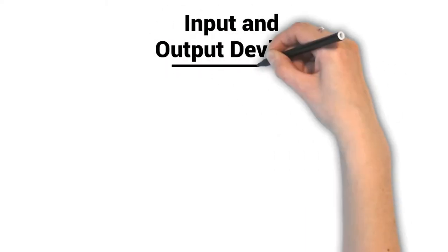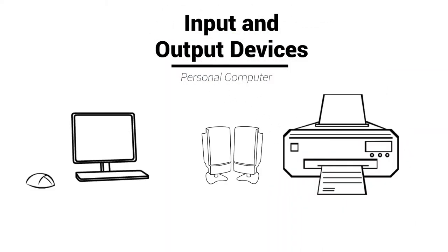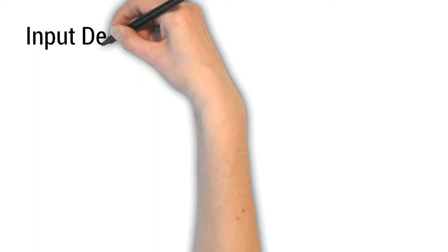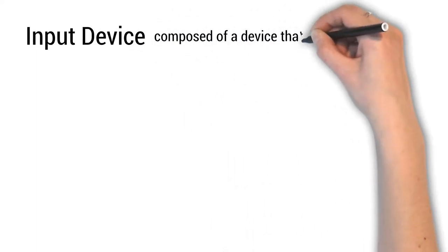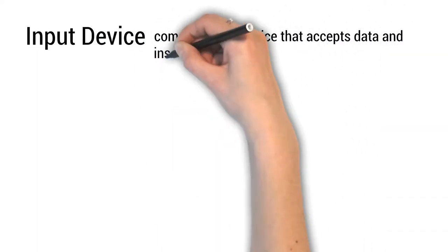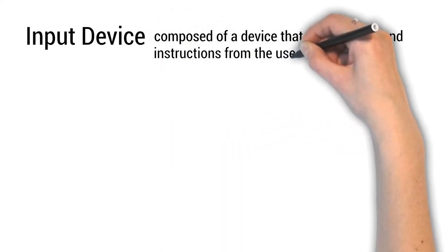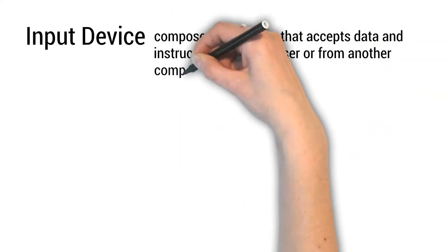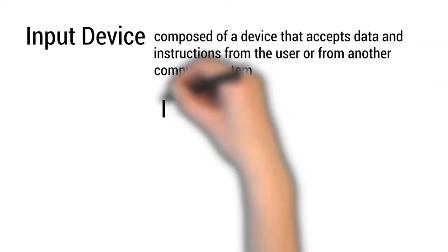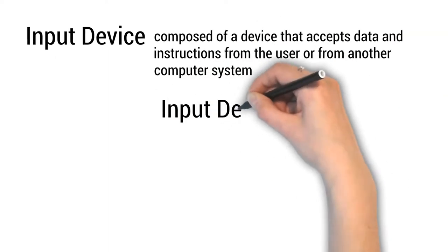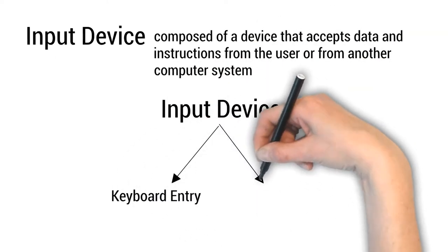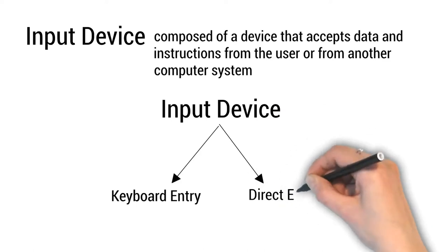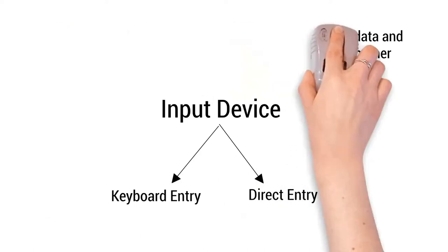Input and Output Devices: Personal Computer. An input device is composed of a device that accepts data and instructions from the user or from another computer system. There are two types of input devices: one is Keyboard Entry, and the other one is Direct Entry.